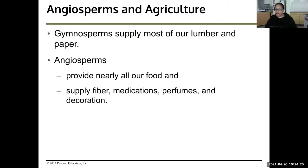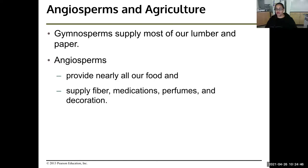Gymnosperms supply most of our lumber and paper. Angiosperms provide nearly all of our food, and also supply fiber, medications, perfumes, and decoration. Gymnosperms and angiosperms are very important to humans in our everyday lives.